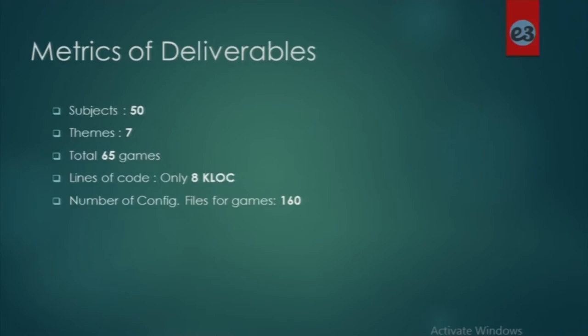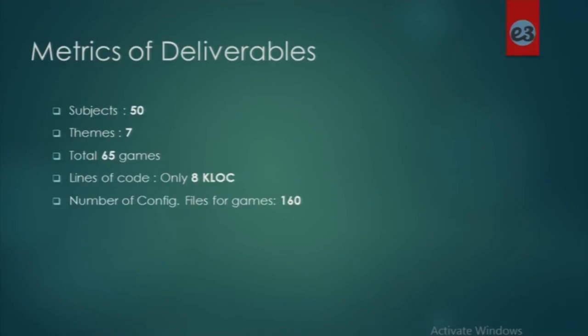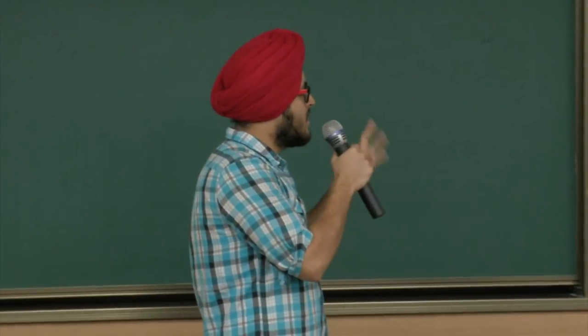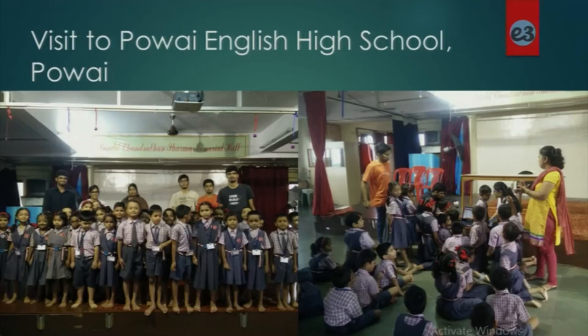Our matrix of deliverables: a total of 50 subjects were made, 7 themes were made, and 65 games through combinations of them were developed. 88 kilolines of code was written, and 160 JSON files — including theme and subject JSON files — were created. The demo is done; these are the things we learned.